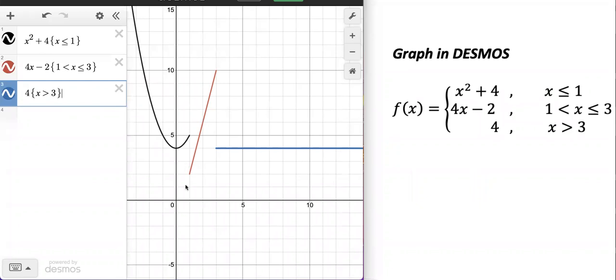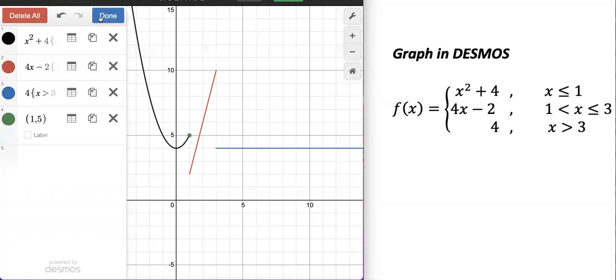First endpoint here happens at x equals 1, paired with y equals 5. So we're going to add that point here: 1, 5. Solid circle, right? It just came out in green, I'm going to change the color to black. Great. Done.